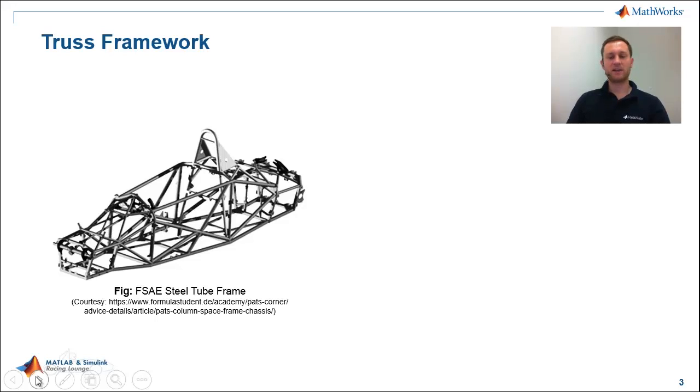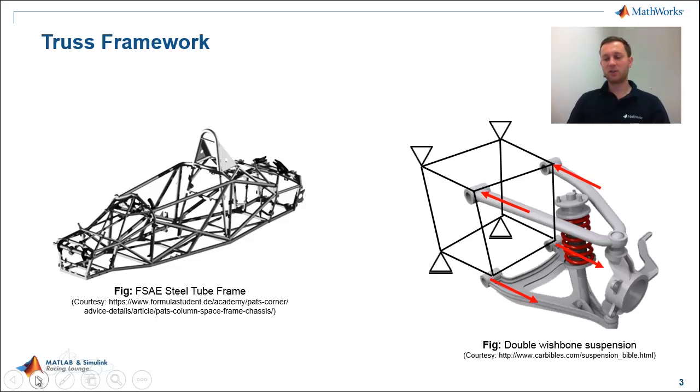I'm not saying that the direct stiffness method can't be applied to an entire steel tube frame, but let me point you to a very simple example. Imagine this is your motor housing and the suspension, rear wheel suspension is attached to that. Via the double wishbone suspension you are introducing certain loads to your motor housing, which is displayed here as a truss framework.